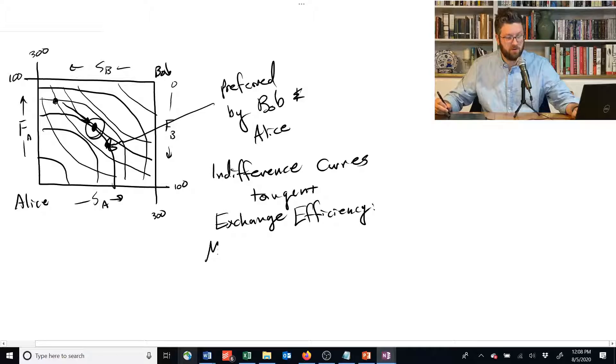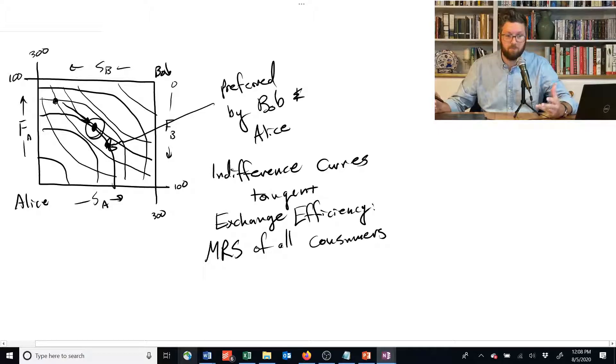And this requires that the marginal rate of substitution of all consumers, which is what we call people in an economy when we're focusing on their decisions about what to consume and their utility function. So the marginal rate of substitution of all consumers is equalized.